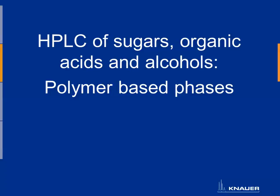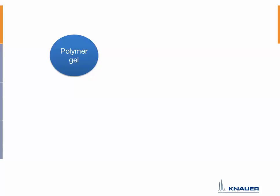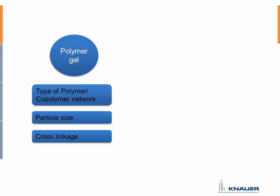When you want to characterize these phases, you have to take into account different things. Starting of course with the polymer gel that is filled in the column — you have to look at the type of polymer or copolymer network. It is also very important to know the particle size of these columns and the cross-linkage of the polymer, which determines key characteristics.